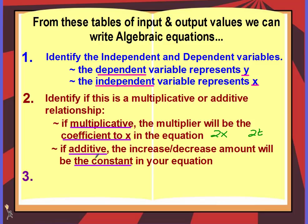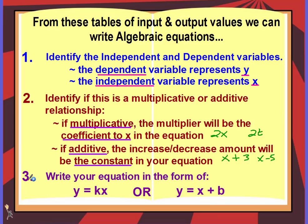If it's additive, then the increase or decrease amount will be the constant in your equation. So if you're adding or subtracting some number from x, that's your constant — for example, x plus 3 or x minus 5. A constant is just a number. Once you've identified whether it's multiplicative or additive, you're ready to write your equation.